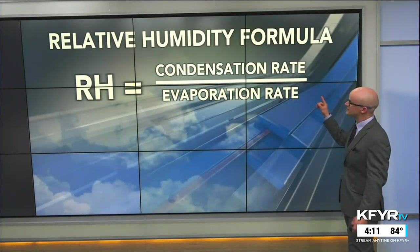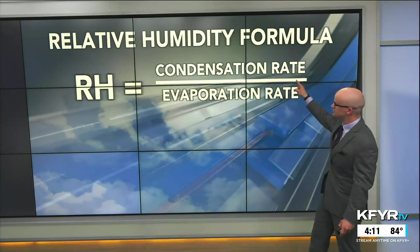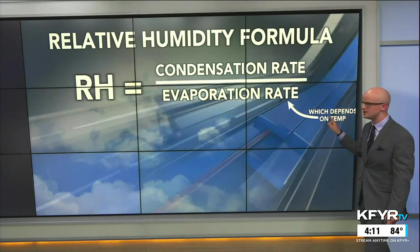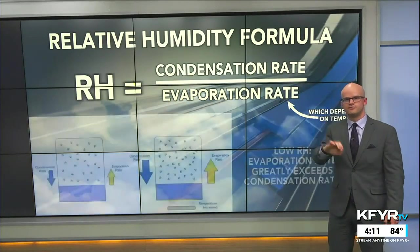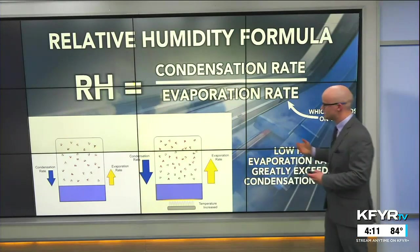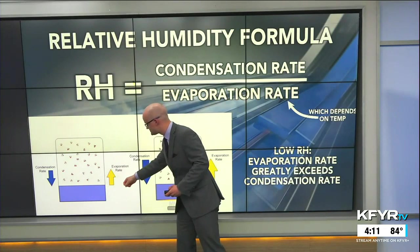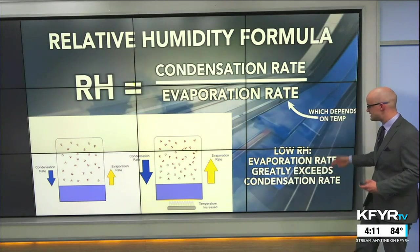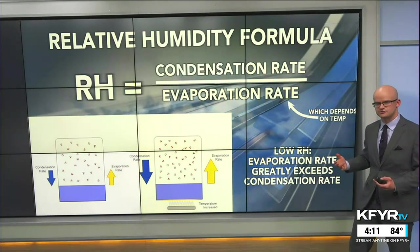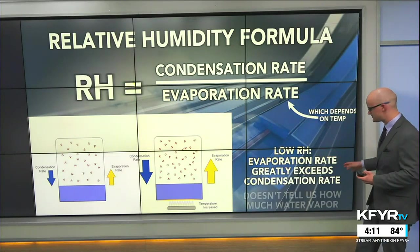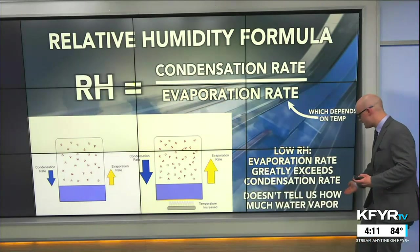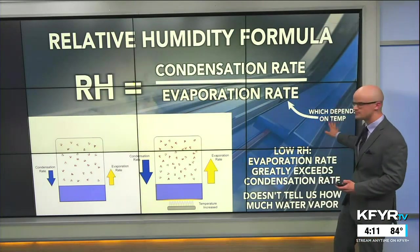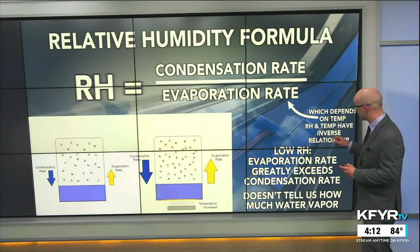The formula for relative humidity is the condensation rate divided by the evaporation rate. This evaporation rate depends on temperature, which is why the relative humidity percentage fluctuates throughout the day based on air temperature. With a low relative humidity, the evaporation rate greatly exceeds the condensation rate — there's not much water vapor in the atmosphere. But it doesn't tell us exactly how much water vapor we have, because it depends on this temperature number.